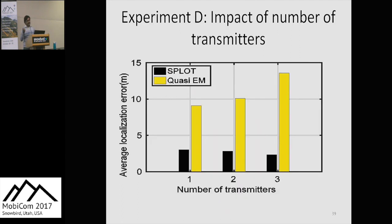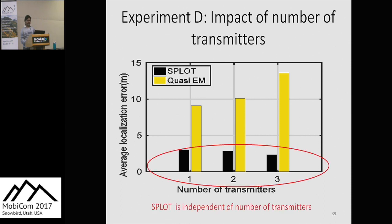For experiment D in the food court area, we see that SPLOT's localization error doesn't really depend on the number of transmitters to localize. However, the same cannot be said for the other algorithm.